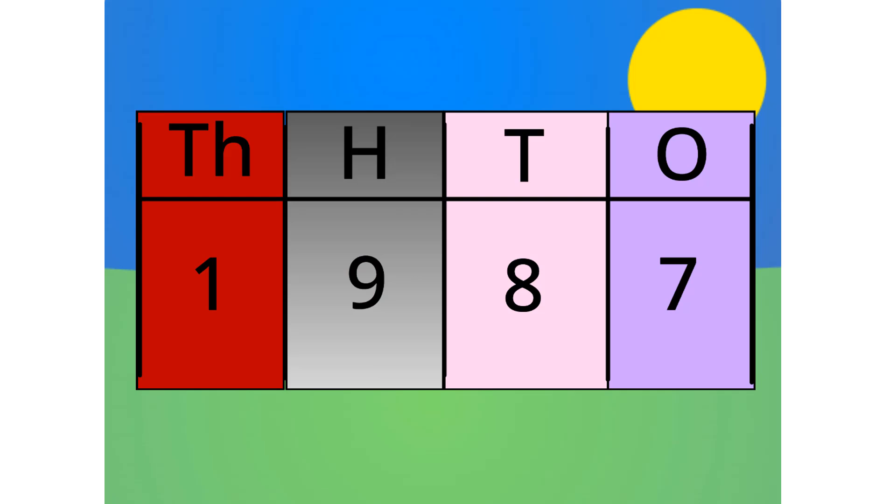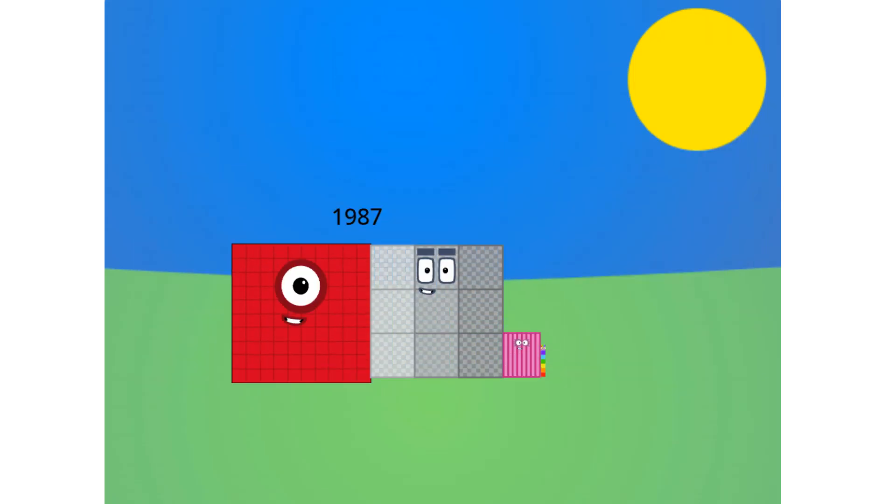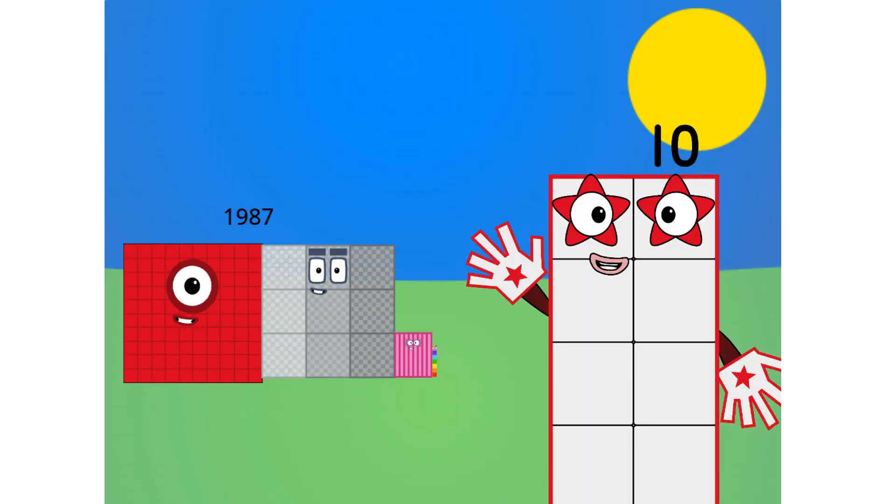Let's see this in block form, shall we? As you can see, this number is 1 thousand, 9 hundreds, 8 tens, and 7 ones. Let me carry on with the first method.